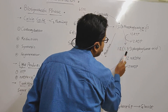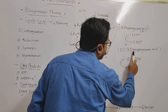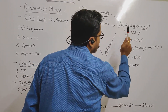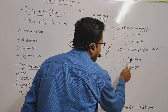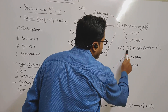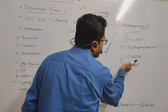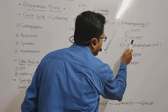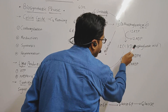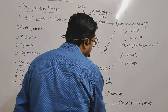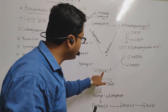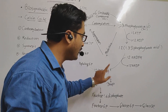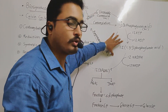In the reduction step, 12 molecules of 1,3-diphosphoglyceric acid are formed — this is the first step in the reduction process. In the second step of reduction, 1,3-diphosphoglyceric acid reacts with 12 NADPH. The 12 NADPH molecules reduce it, and after this reduction, 12 molecules of 3-PGAL (3-phosphoglyceraldehyde) are formed. This is the overall reduction process.